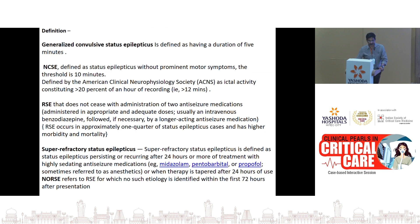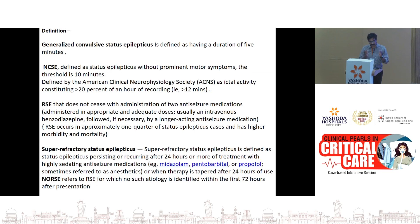Refractory status epilepticus: when a patient comes to the ER, the first drug given is midazolam or lorazepam. The next drug is levetiracetam, phenytoin, or sodium valproate. Even after giving those two classes of drugs — benzodiazepines and secondary prevention drugs — if the patient is still seizing, we call it refractory status epilepticus. Super-refractory status epilepticus: after those two classes of drugs, if still seizing, we use one of three anesthetic agents — midazolam continuous IV infusion, pentobarbital or thiopental, or propofol. If the patient is still seizing on those drugs, that is super-refractory status epilepticus.